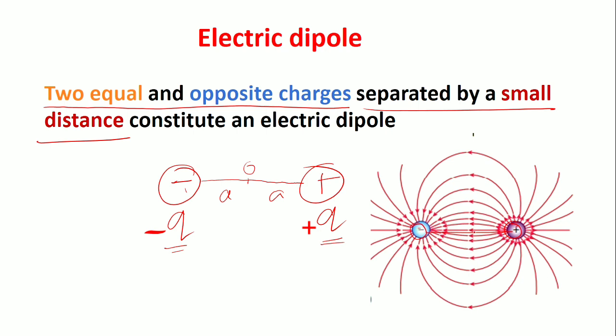The charge electric fields start from positive and end in negative. So in the total setup we are seeing the electric dipole. Please understand the concept, don't memorize anything.